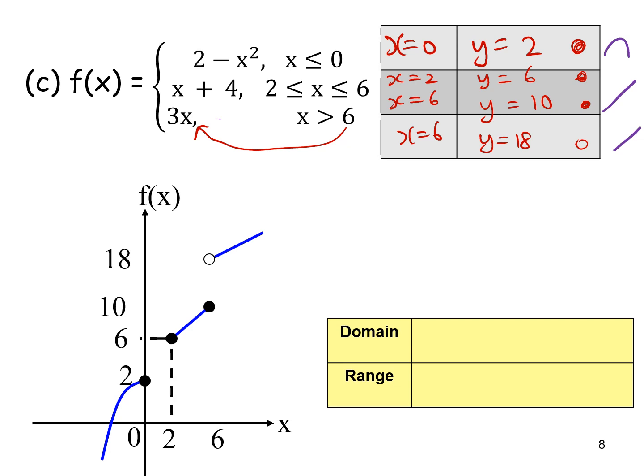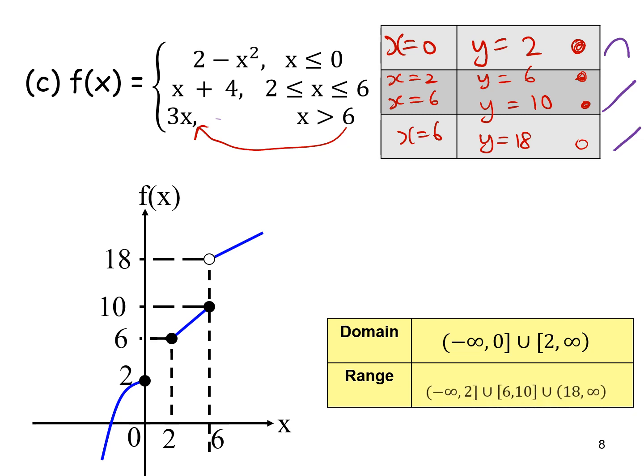For the domain: from negative infinity to 0 closed, then there is no graph from 0 to 2, so union open 2 to 6, then union 6 to infinity. For the range: from negative infinity to 2 closed, no graph from 2 to 6, so union 6 to 10 closed, union 18 open to infinity.